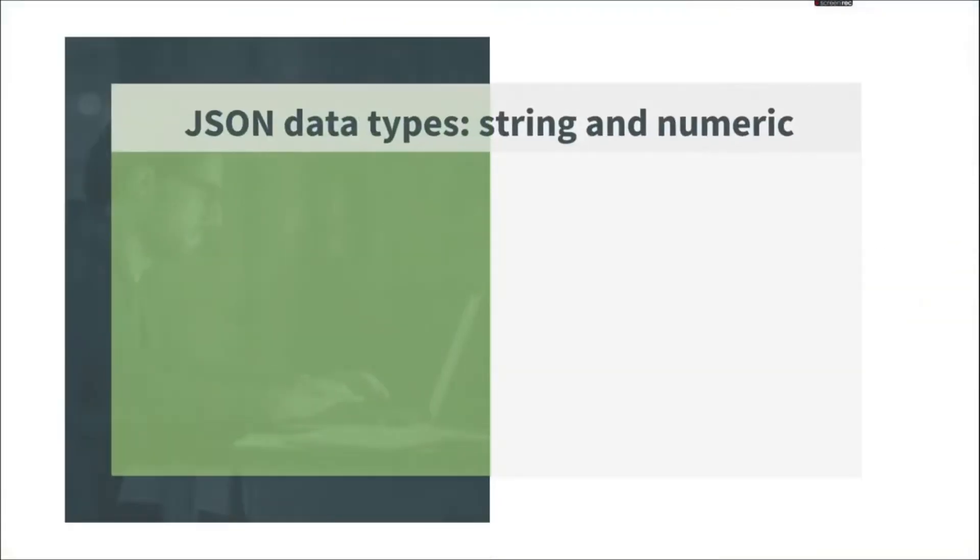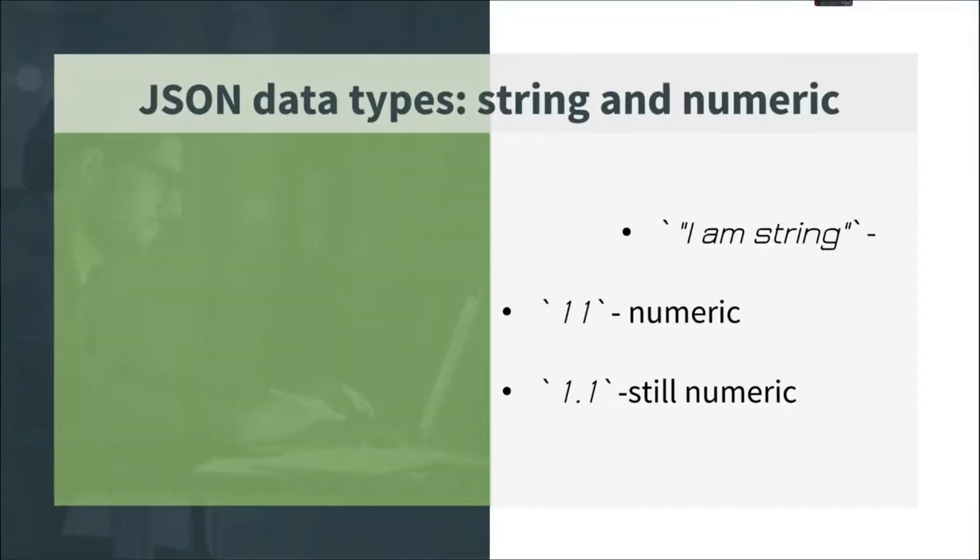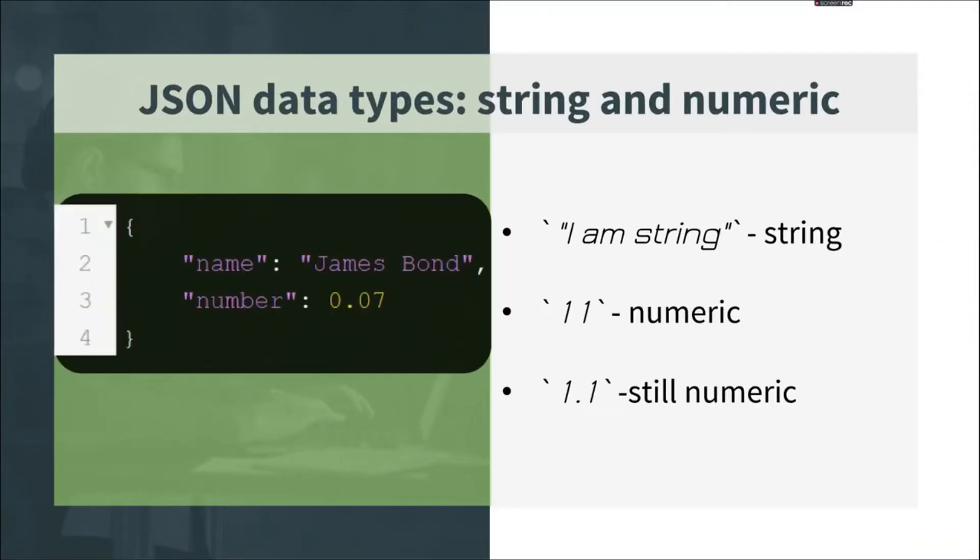Two other types are string and numeric. There is no special data type for integer or float numbers. String starts and ends with quotes. For example, I am a string.